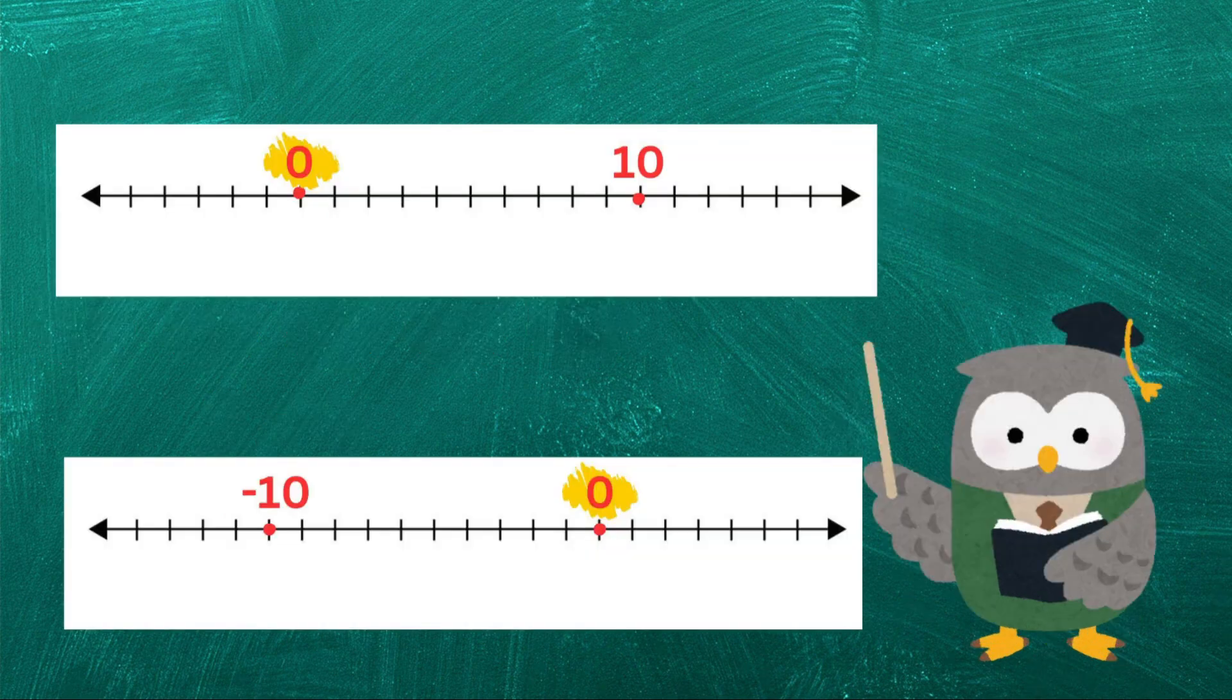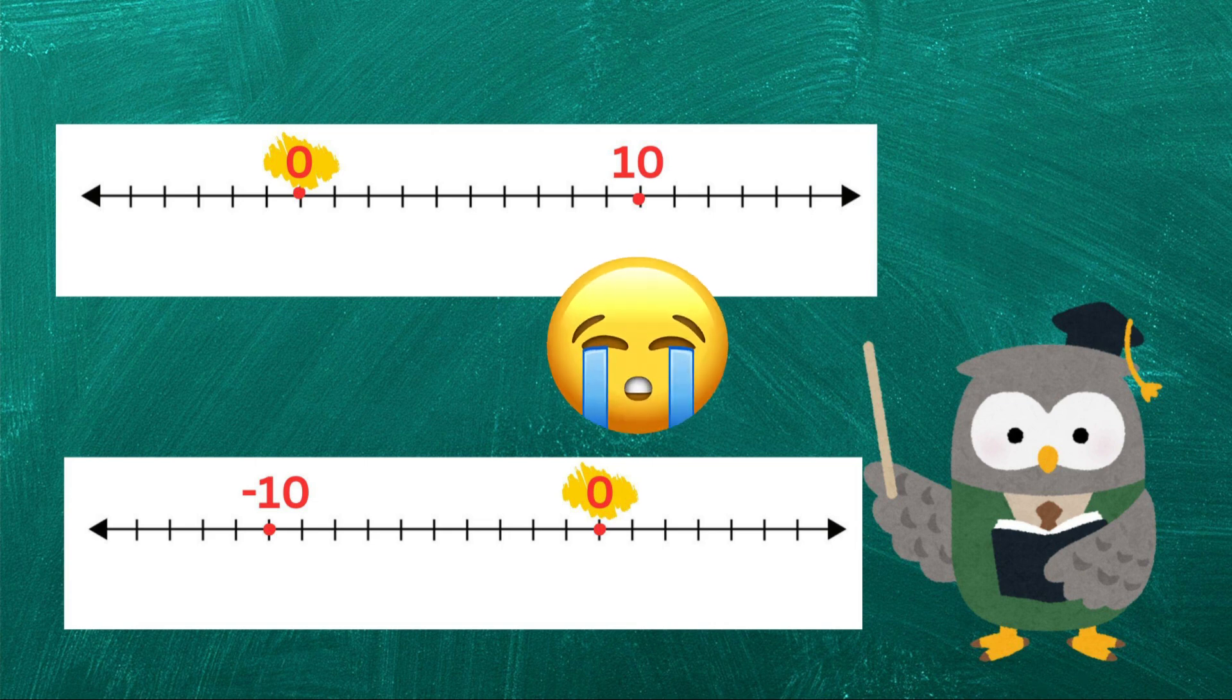And it's not just positive numbers. Zero also helps with negative numbers and decimals. For example, minus ten means we're ten units below zero, and 0.5 means we have half of one. Without zero, we'd be lost.